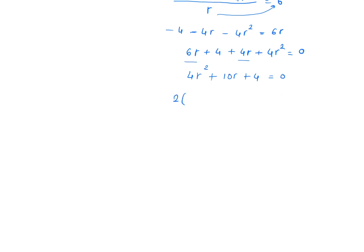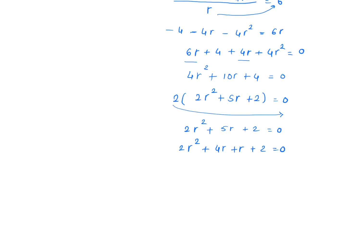Taking 2 as common, we get 2r² + 5r + 2 = 0. Dividing through by 2 confirms 2r² + 5r + 2 = 0.